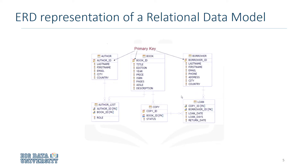Notice that the attributes author ID, book ID, and borrower ID have a special icon. This identifies the primary key. A primary key of a relational table uniquely identifies each row in a table.